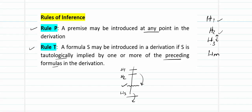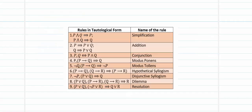Now we will see the rules frequently used in solving problems of theory of inference. P and Q implies P, and P and Q can also imply Q — this rule is called simplification. On the contrary, P can imply P or Q, and similarly Q can imply P or Q — you call this addition.